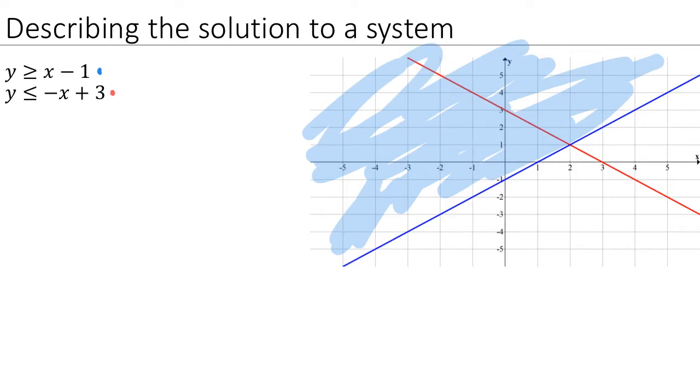On the other hand, if we were only looking at the second inequality, we would shade all the points that are below the red line. That would be all the points down here.